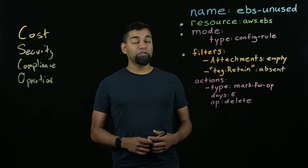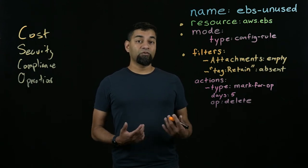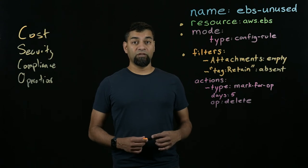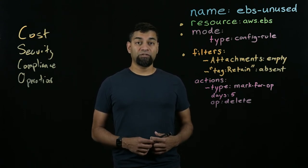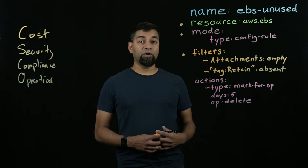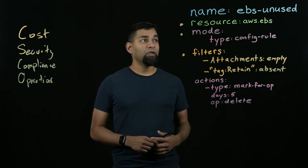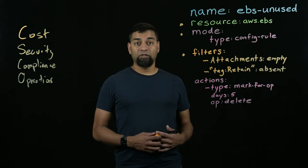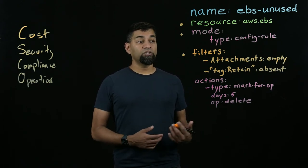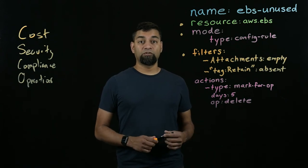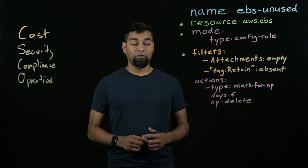In this particular policy, we have what's called a config rule mode. This corresponds to AWS's Config managed service, and when we run this policy, we'll actually provision an AWS Lambda function as well as a custom config rule and hook it up to that function. Whenever an AWS EBS volume changes in that particular environment, AWS Config will invoke our function and this policy will execute to determine that those resources are compliant to its goals.